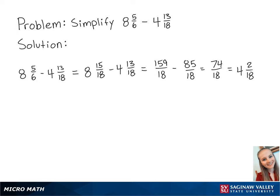2 eighteenths can be reduced down to 1 ninth. So, now we have 4 and 1 ninth. And this is the final answer.